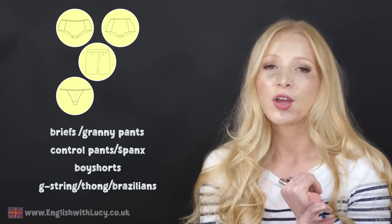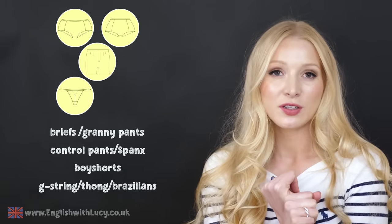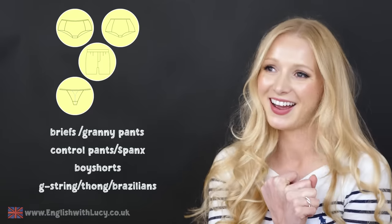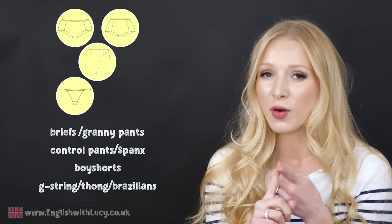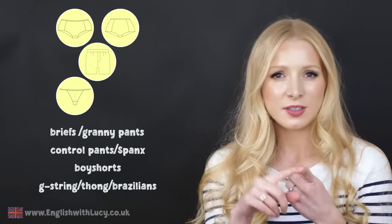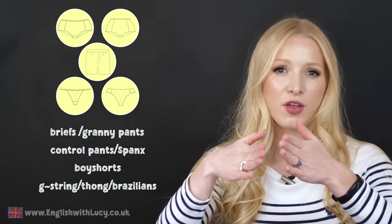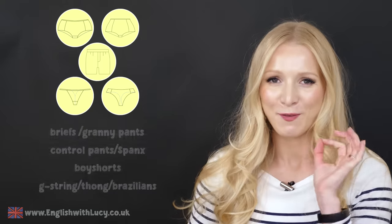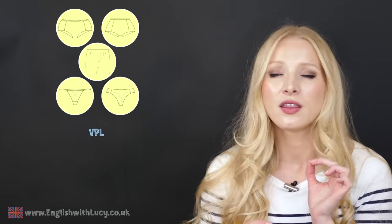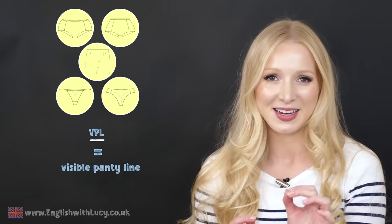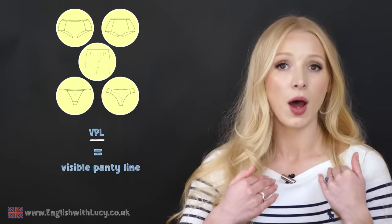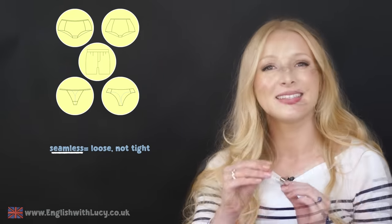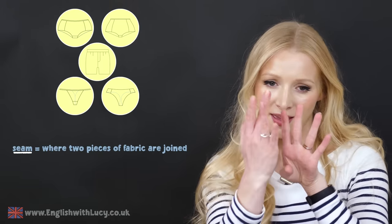We also have knickers with just a thin strip at the back. These have many names — you can call them a G-string. I grew up playing the violin and always found it funny when my G string broke! You can also call them thongs or Brazilians. Thongs have a really thin strip at the back, and Brazilians are slightly thicker. Lots of women choose to wear these to avoid the VPL — visible panty line — where the edge of your underwear digs into your skin and is visible through clothes. I prefer a seamless look; seamless means smooth without any joins. A seam in clothing is where two pieces of fabric have been sewn together.